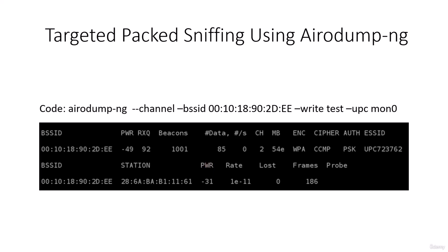The station column shows the MAC address of the client device connected to the network. Power shows the distance between us and the device. Rate shows the maximum speed the device is running on. Lost shows the number of packets we lost when capturing from the target device. Frames shows the number of useful packets collected from that device. We'll talk more about frames and data in the future when we start discussing WEP cracking.